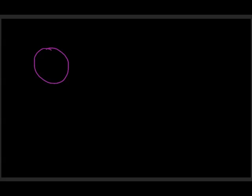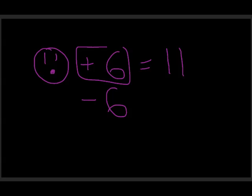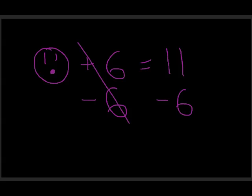Let me show another example using the variable 'outlet': outlet plus 6 equals 11. I have 6 extra on the left side that I need to get rid of to isolate the variable. So I subtract 6 from both sides. The plus 6 minus 6 cancels, leaving just outlet on the left. On the right, 11 minus 6 gives me 5, so outlet equals 5. Check: 5 plus 6 is indeed 11.